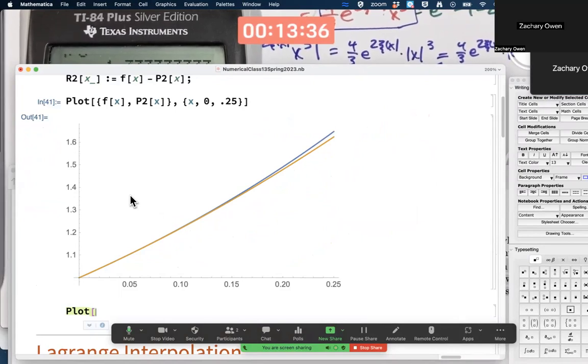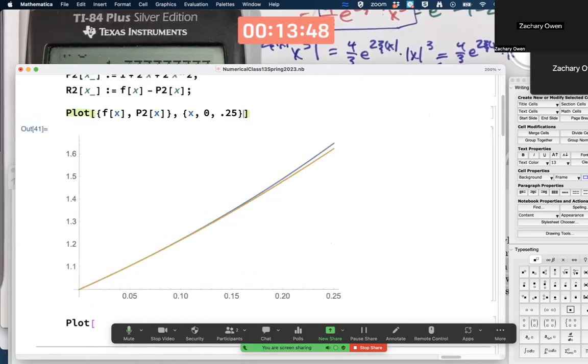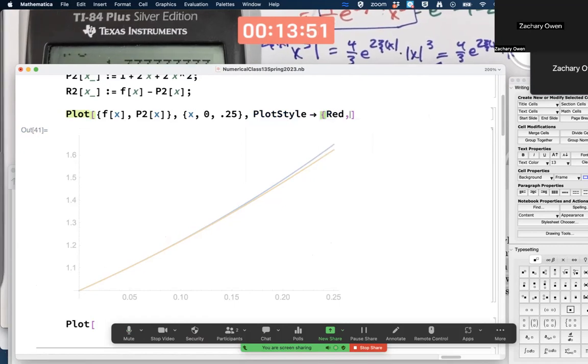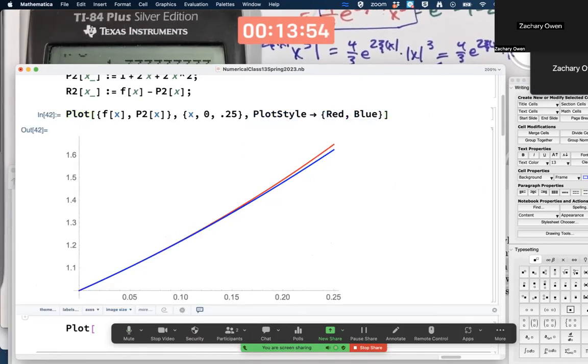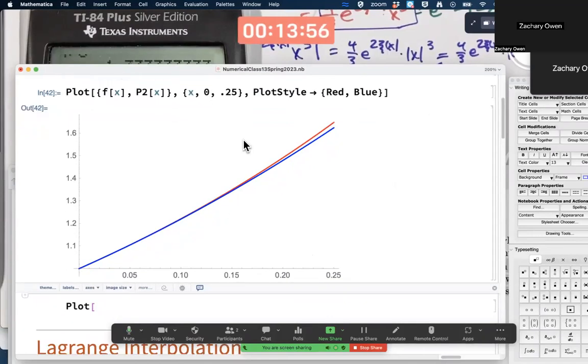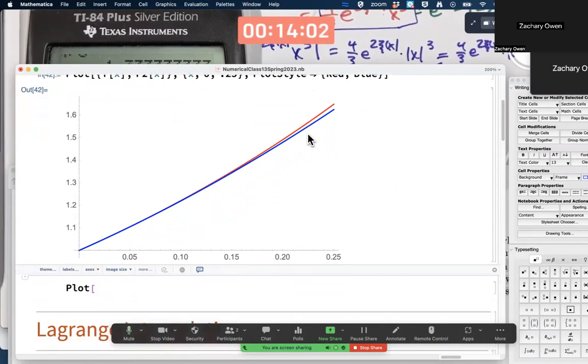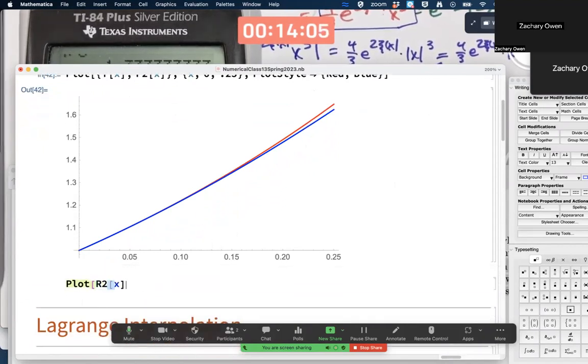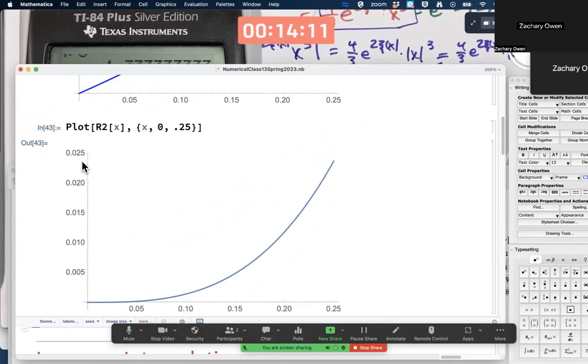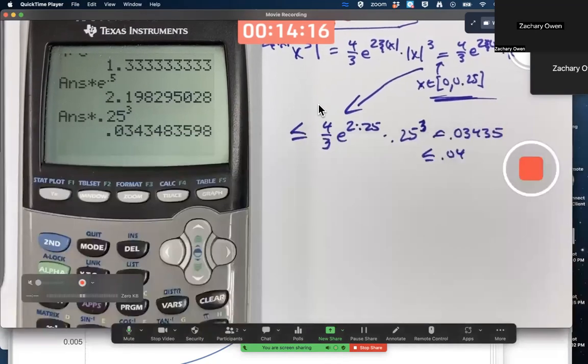And now let's plot r2 of x. I could also plot its absolute value. Which function is higher here? I believe the e to the 2x is higher because it's concave up here and the third derivative is positive. Yeah, e to the 2x is the upper one. That's the original function. Error is actual minus approximate. So the error here, r2 of x, is actually positive. I don't need to take its absolute value. There it is. It never gets above 0.025 even. It's certainly less than or equal to 0.04.